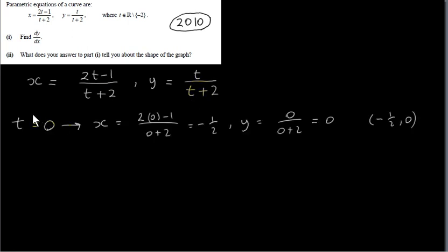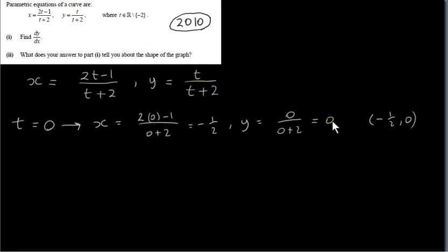To get points on the curve we use the single parameter t. If we pick t equals 0 and plug it in, we get 2 times 0 minus 1, which is minus 1, over 0 plus 2, which is 2, giving x equals minus one half. When t is 0, y equals 0 over 0 plus 2, which is 0. So when x is minus one half, y is 0 — the point (−1/2, 0) is on the curve.